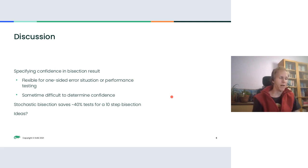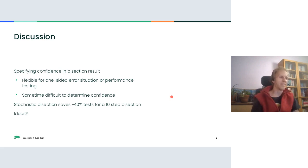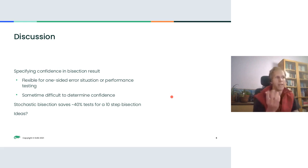I actually wrote a simulator to do the bisection and randomly flip a random number generator to decide about test results. Based on experiments with a 10-step bisection and 80% confidence in each test result, stochastic bisection actually saves about 40% of the tests.